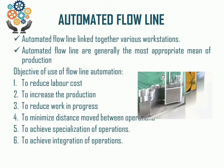The Automated Flow Line can minimize the distance between two work stations or two operators, and can specialize operations. Whether it is mass production, job production, or batch production, the specification of the Automated Flow Lines will be required accordingly, to specialize operations for particular automation types.